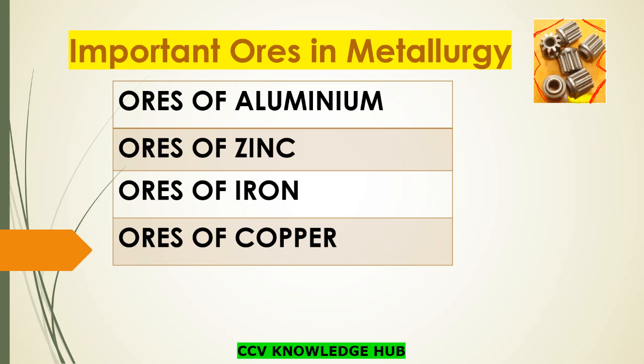Hello friends, welcome to CCV Knowledge Hub. In this session we will learn important ores in metallurgy — ores of aluminium, ores of zinc, ores of iron, and ores of copper.